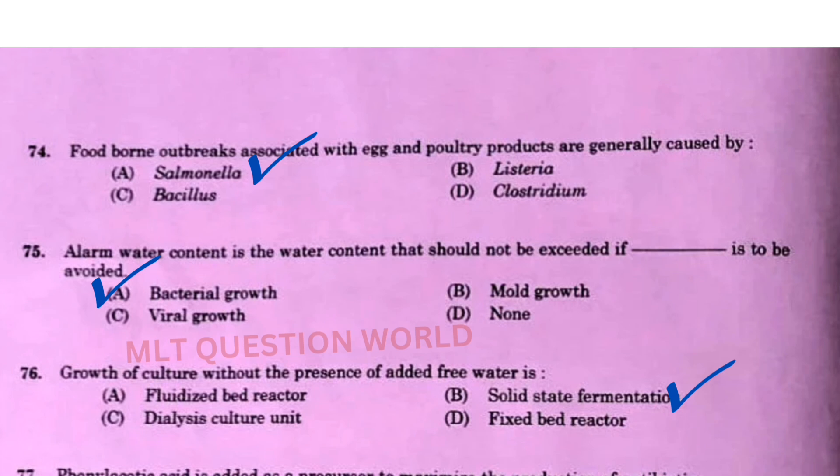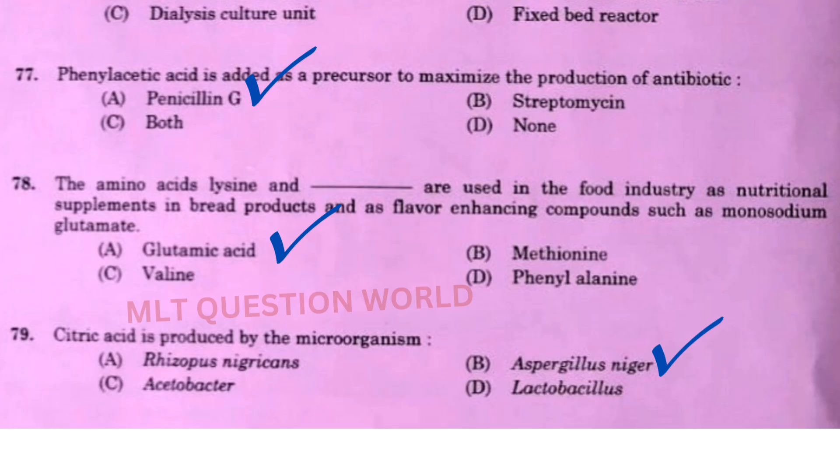Next question: Growth of culture without the presence of added free water is — the right answer is option B, solid state fermentation. Next question: Phenylacetic acid is added as a precursor to maximize the production of antibiotic — the right answer is option A, Penicillin G.